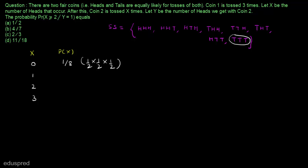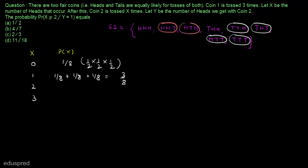The probability that X equals 1 means we get only 1 head. There are 3 such outcomes, so P(X=1) = 3/8. For X equals 2, there are again 3 outcomes, so P(X=2) = 3/8. And P(X=3) = 1/8. These are the possible values of X and their corresponding probabilities. Now, coin 2 is tossed X times and Y is the number of heads we get with coin 2.